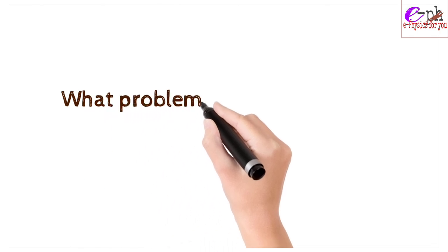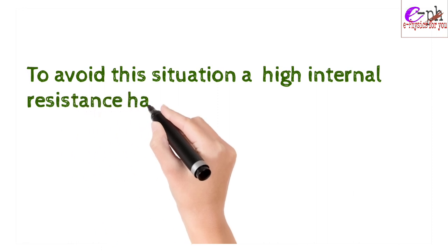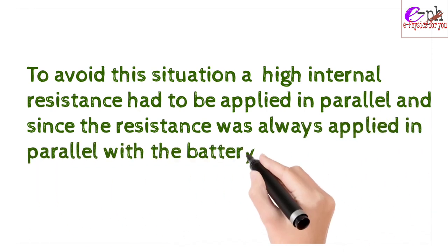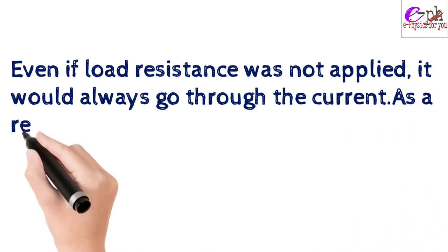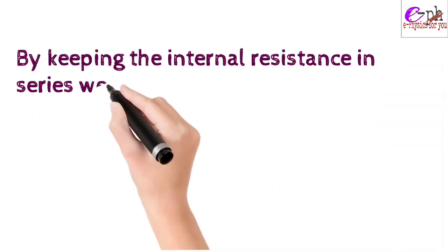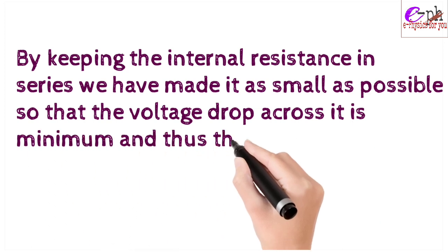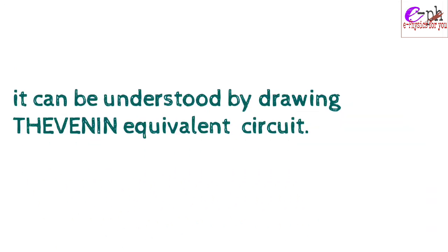Now I will give the answer to the previous question about why internal resistance is in series. The internal resistance representation signifies the non-idealization of the source. If it were in parallel, parallel voltages are the same and it would short the battery. To avoid this, a high internal resistance would have to be applied in parallel, but even without a load it would always draw current, quickly damaging the battery. By applying internal resistance in series, we keep it as small as possible so the voltage drop across it is minimum, ensuring maximum voltage drop across the load.